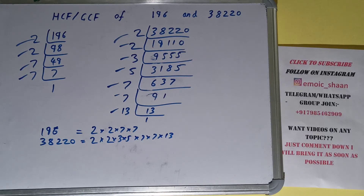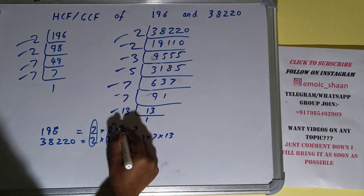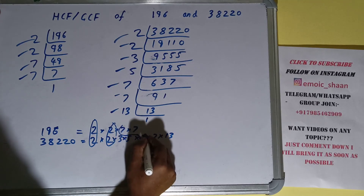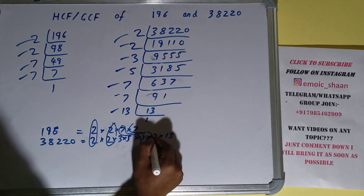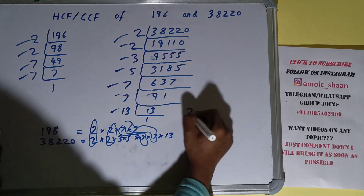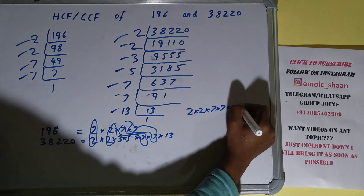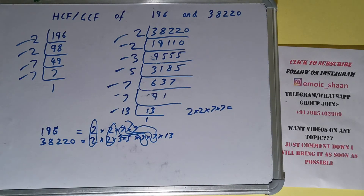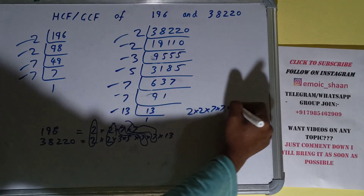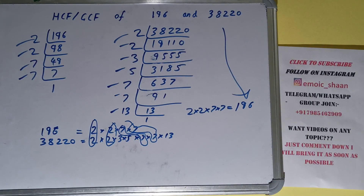The next thing we need to do is circle out the common prime factors. We have 2 in common, another 2 in common, 7 in common, and one more 7 in common. So the answer will be 2 × 2 × 7 × 7 = 4 × 49 = 196. So the HCF or GCF of 196 and 38220 is 196.